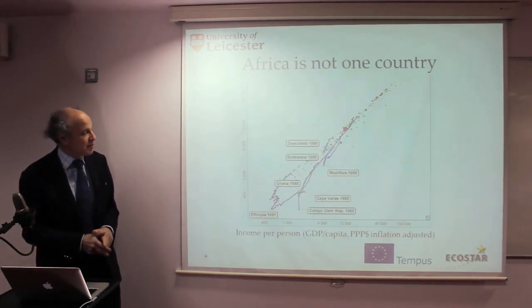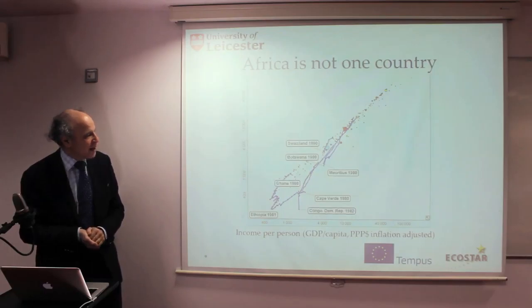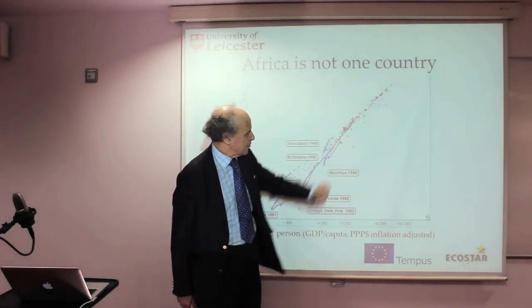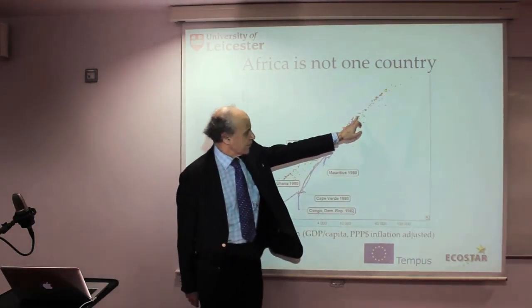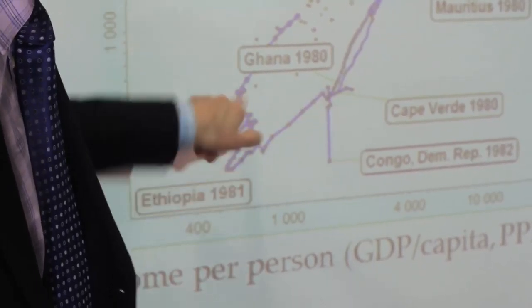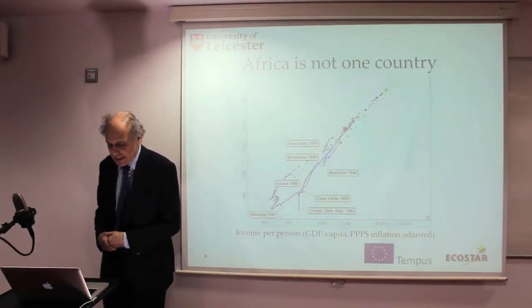Just to emphasise that Africa isn't one country, we can look at the development tracks of various African countries over the 20 years since 1980. What you see, looking at those blue lines, is very different development trajectories. Mauritius has shot up under very good governance to become one of the richest countries in Africa. Ghana is making some progress, Cape Verde wandering all over the place. So there's a great variety of development trajectories even within some of the poorer countries.